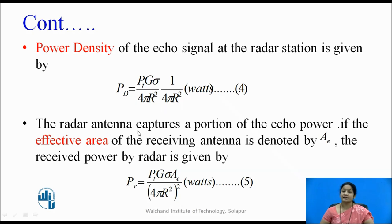The radar antenna captures a portion of this echo power, which is the reflected power. If the effective area of the receiving antenna is denoted by Ae, then the received power Pr is obtained by multiplying the power density by the effective area Ae of the antenna.